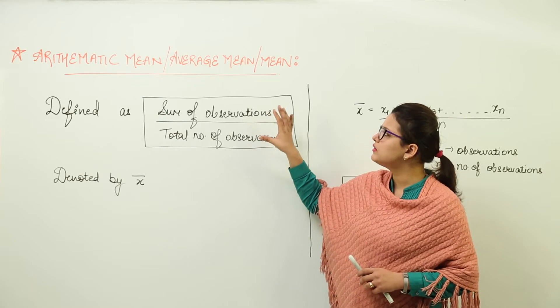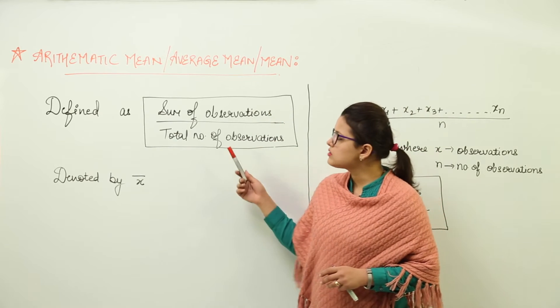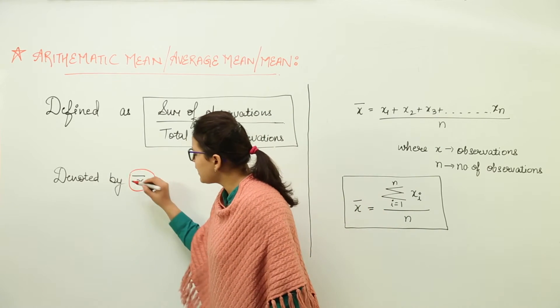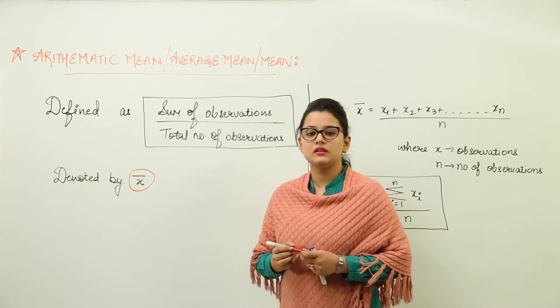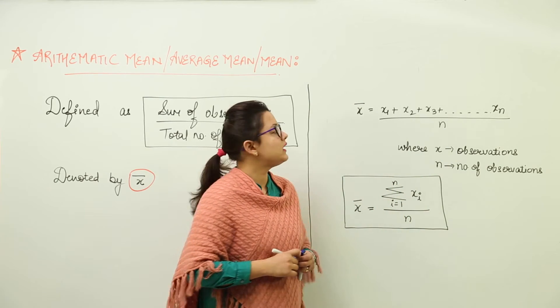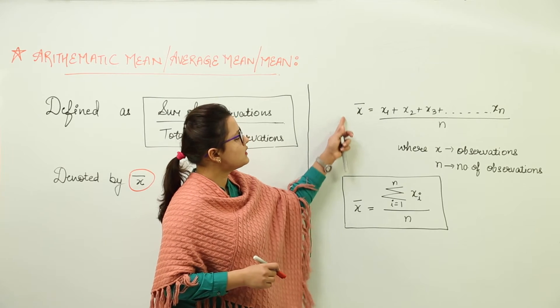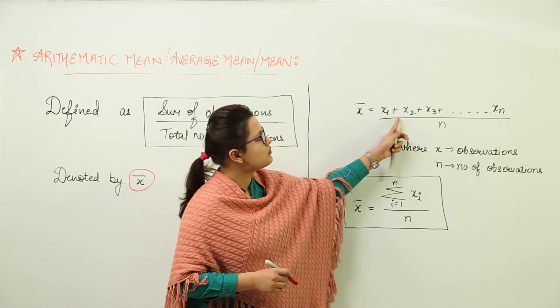That would give us the mean of the data. It is denoted by X bar. You write X and make a line over that. This will represent the mean of any data. Now this can also be written in this form. Now this is representing mean equal to sum of observations.